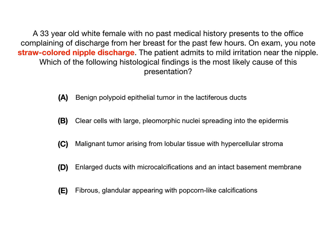The answer to this question is intraductal papilloma. But now the question is which of these descriptions describes the intraductal papilloma. You have to be able to do two things: one, reason through what clues they would give you in the clinical vignette if they wanted you to pick a certain tumor; and two, once you've identified which tumor it is, know the histological description — that's just brute memorization. The answer is intraductal papilloma, and the phrase that describes it is A: a benign polypoid epithelial tumor in the lactiferous ducts. When studying, make sure you understand the histological descriptions but also understand what buzzwords would be in the clinical vignette if they wanted you to pick a certain tumor.